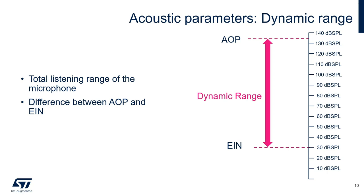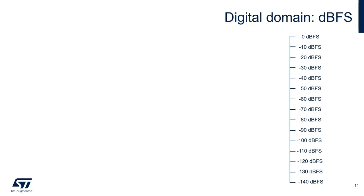Using the two parameters we just defined, we can now approach the dynamic range, which basically defines the listening range of the microphone, and it's computed as the difference between the AOP and the equivalent input noise. We have covered the physical domain and how we can measure the sound pressure in the real world. We now introduce a different domain — the digital one — which represents the signal after the analog to digital conversion. In this domain, a different unit is used: the dBFS.